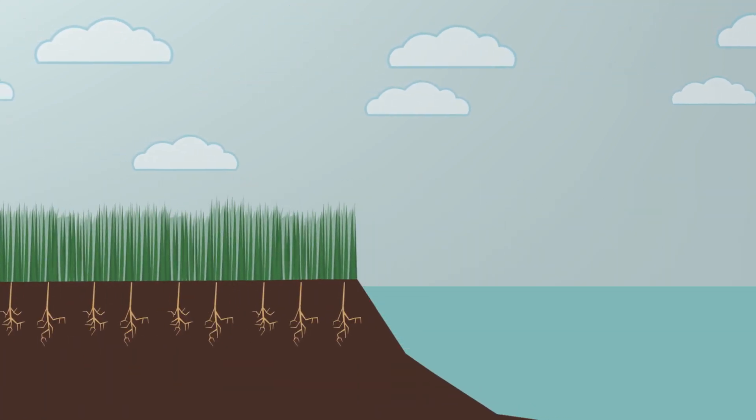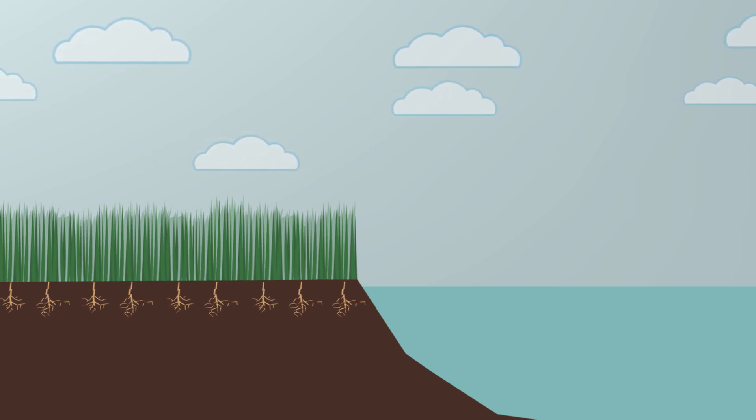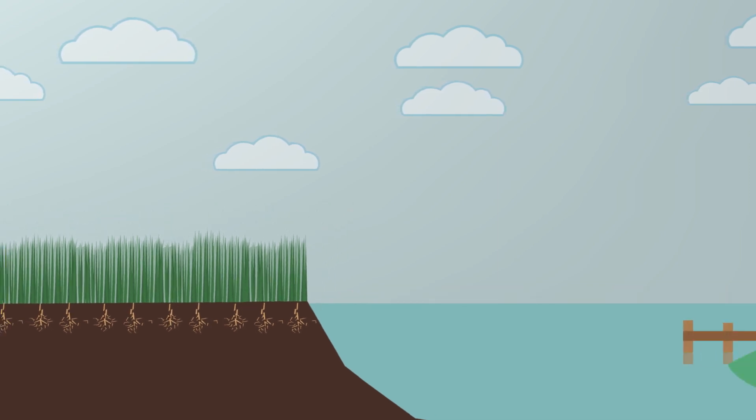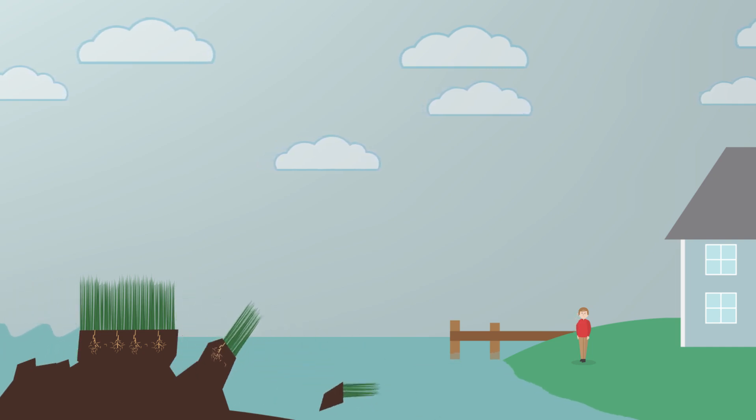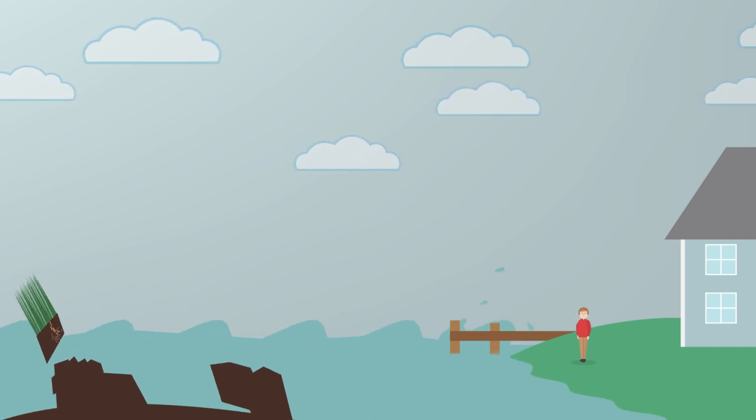Nitrogen pollution also impacts wetlands. Salt marshes that used to have deep, dense roots now have roots that are shallow and flimsy. Huge chunks of coastal marshes are just falling away, leaving bayside communities more vulnerable to waves and erosion.